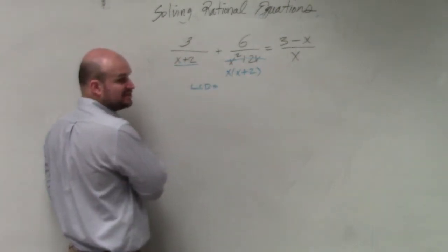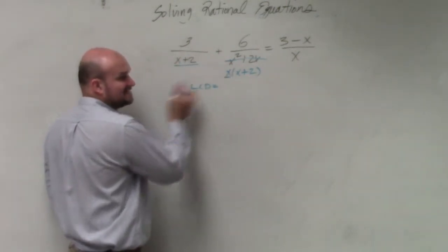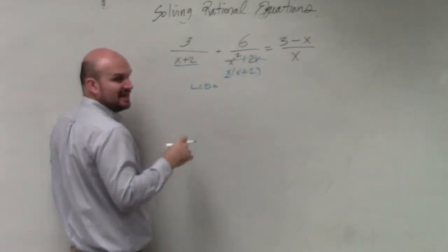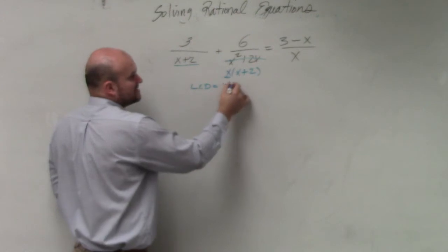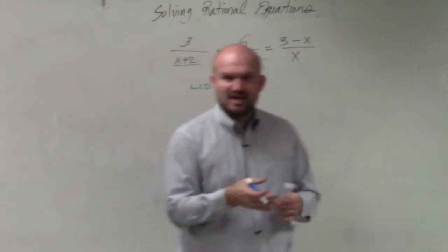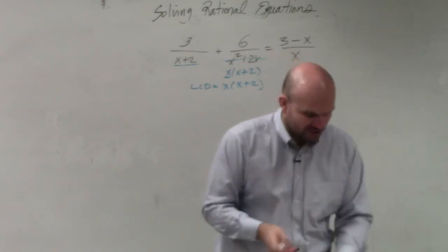So I could say, right now, x plus 2 is unique. I can say x is unique. But I'm not going to do x plus 2 again, nor am I going to do x again. So therefore, my LCD is just x times x plus 2. And that's it. You're not going to redo redundant terms.